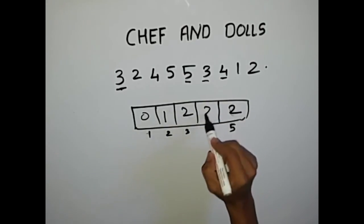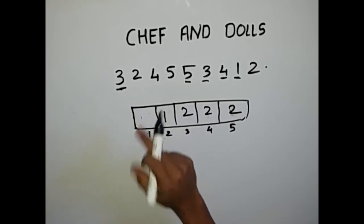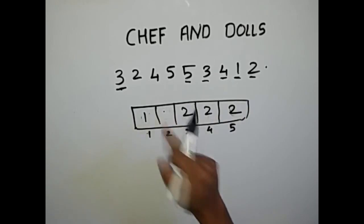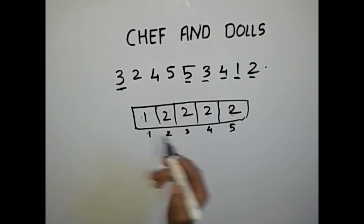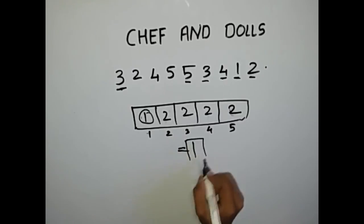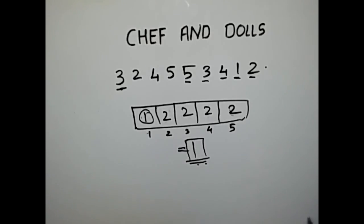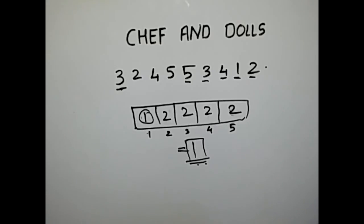Next input is four — becomes two. Next input is one — it's still zero, so it becomes one. Again input is two — becomes two. Now all we have to do is traverse the array once: if we find an odd number, print it. In this case the answer is one, so doll number one is missing. This is the solution for this problem. The main aim is to teach you the technique called hashing, which we'll use in many problems ahead. Please subscribe to our channel — we'll be making more videos on problems from CodeChef. If you need any specific problem, comment the name or link and we'll solve it. Thank you, peace, goodbye.